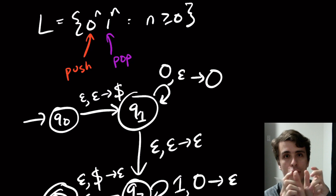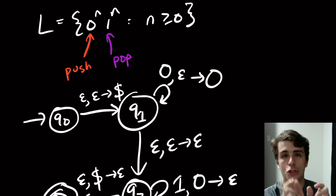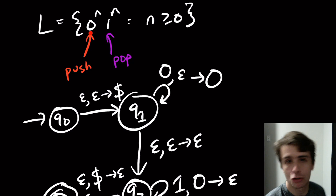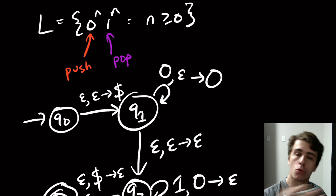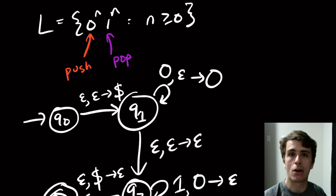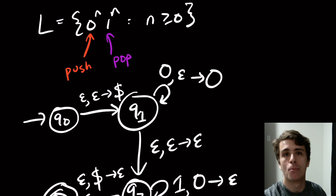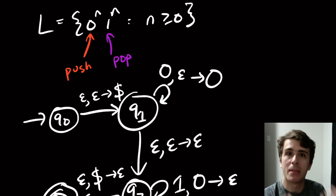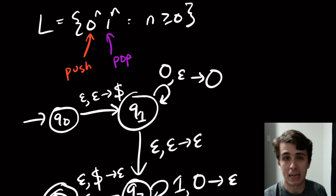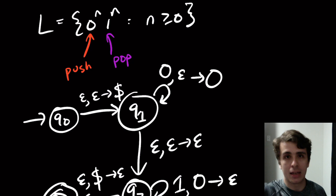My recommendation: when designing a PDA, look to see if you can decompose a string into two pieces with matching counts, then push one set of characters and match them with the other. There are differences depending on the language, but that's the general principle with PDAs.